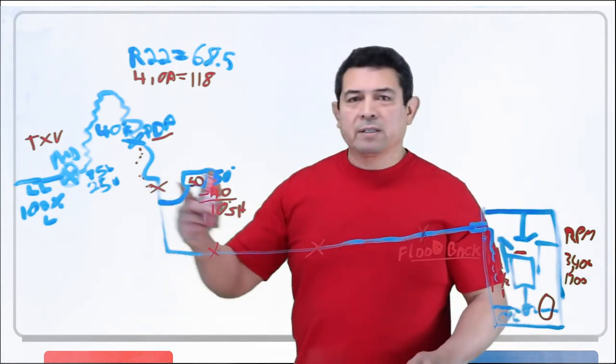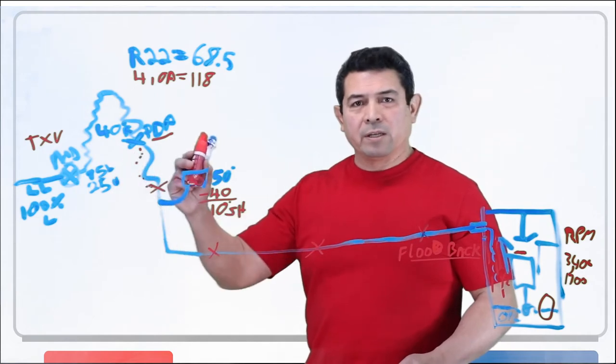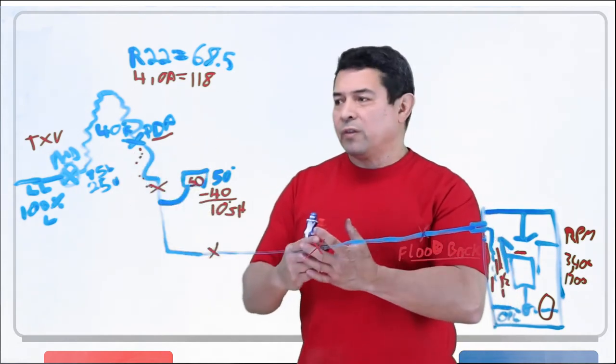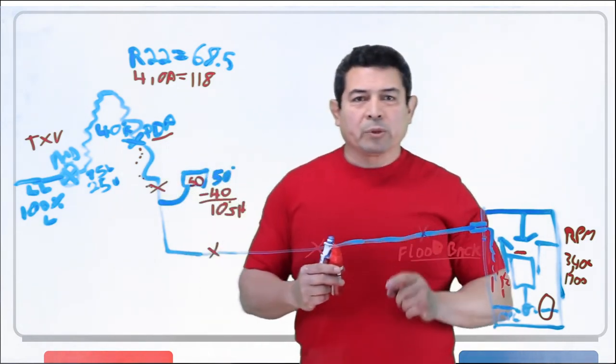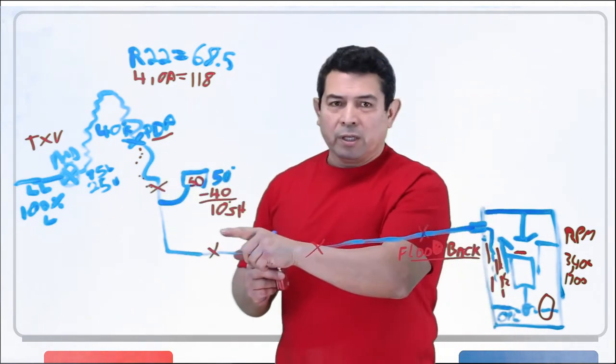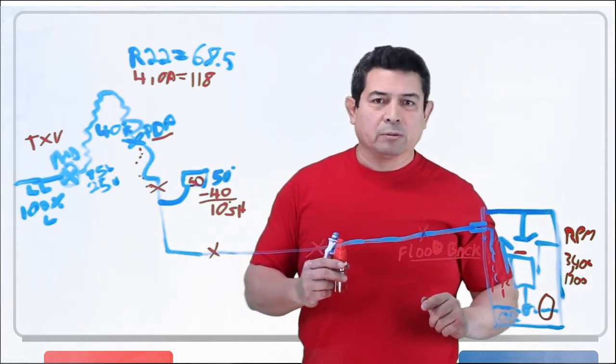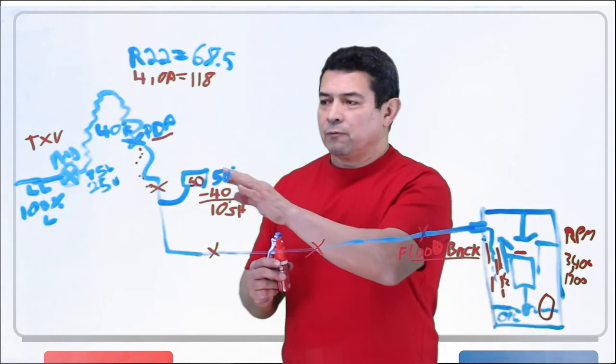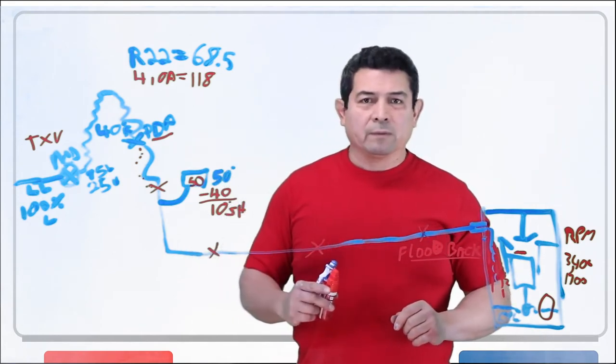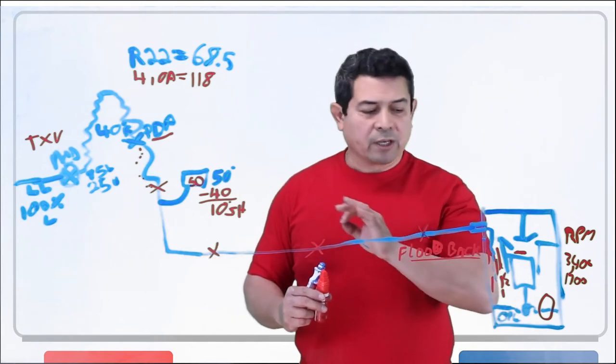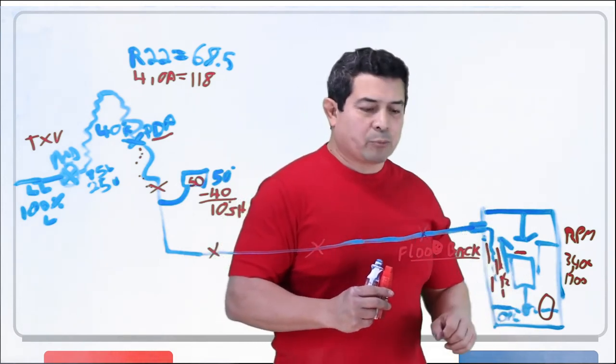If we were to replace the TXV, if we were to replace the metering device here and put one that's not broken, put one that's working properly, then we're going to see that we have the proper superheat. If you have superheat, you're not going to get liquid coming back to the compressor. It's impossible for you to get liquid coming back to the compressor if you have superheat. So it's very important for you to check that. We said flood back is when liquid comes back to the compressor.